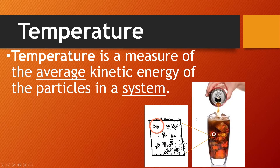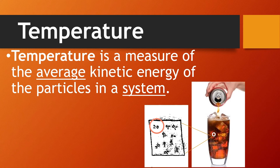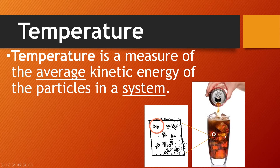Next we have temperature. Temperature is the measure of the average kinetic energy of the particles in a system. When you put a thermometer in something, you are measuring how fast the particles are moving. For example, in a soda with ice, it will show a low temperature because the particles are moving slower than they would in a cup of hot coffee.